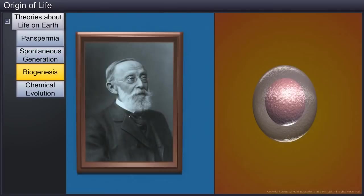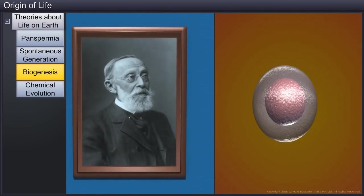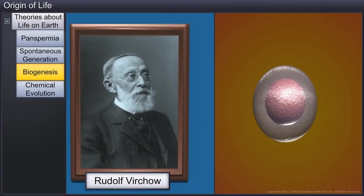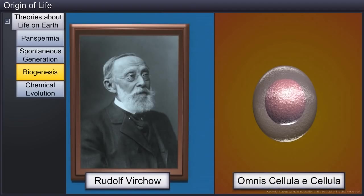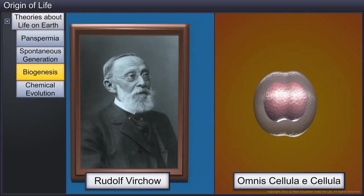The theory of spontaneous generation was in vogue until a German biologist, Rudolf Virchow, challenged it with his theory called Omnis Cellula E Cellula, which expounded that living cells can arise from pre-existing cells.